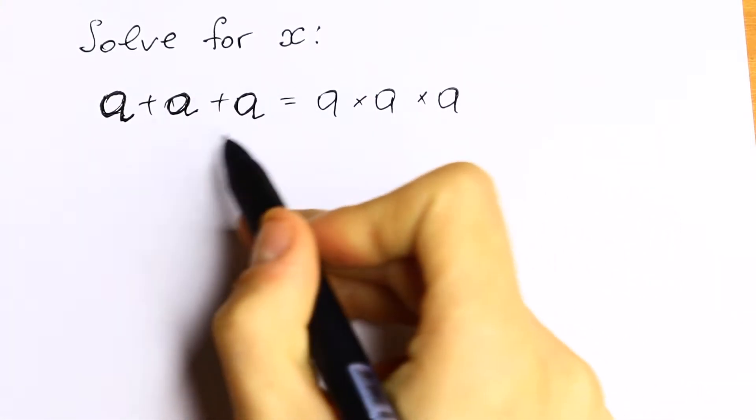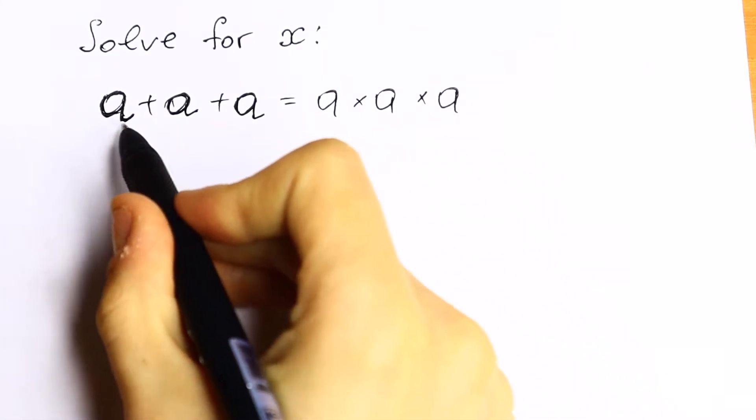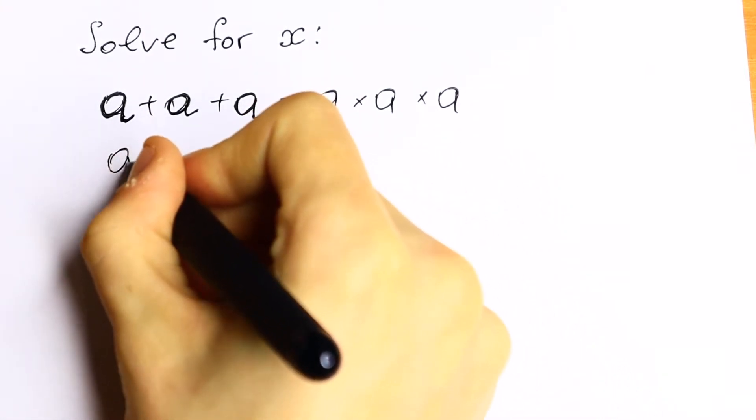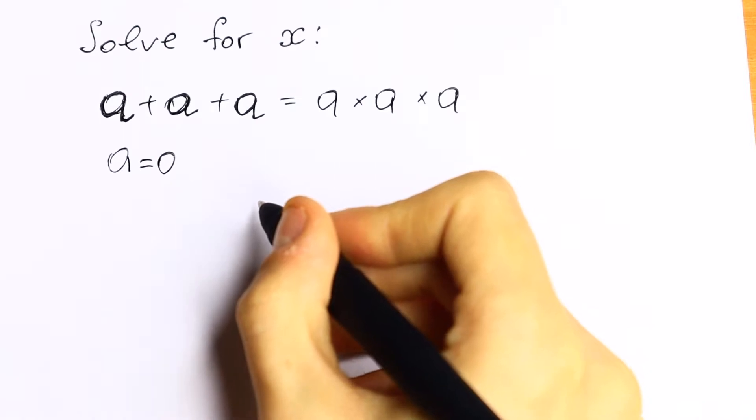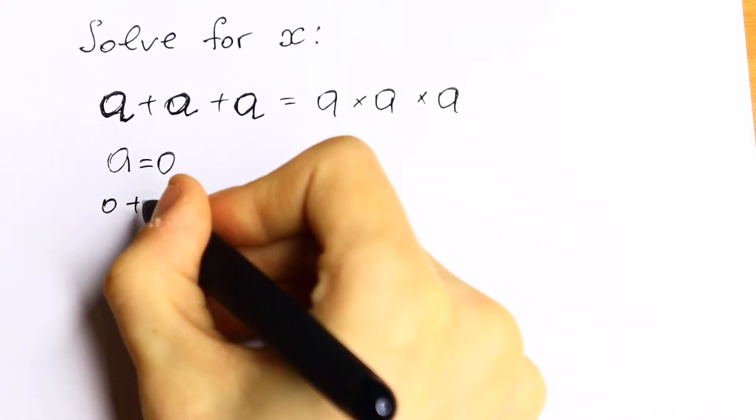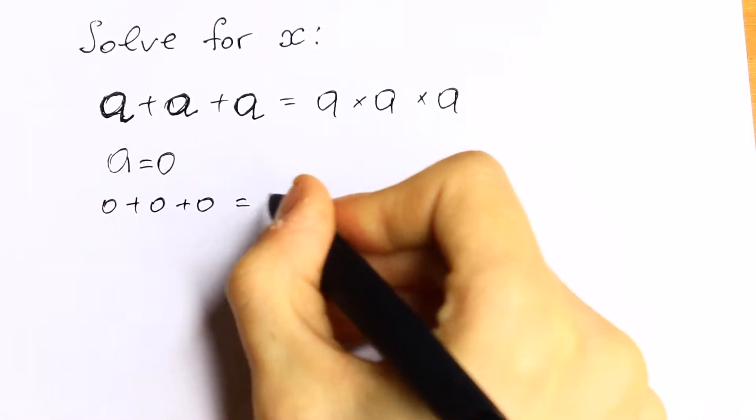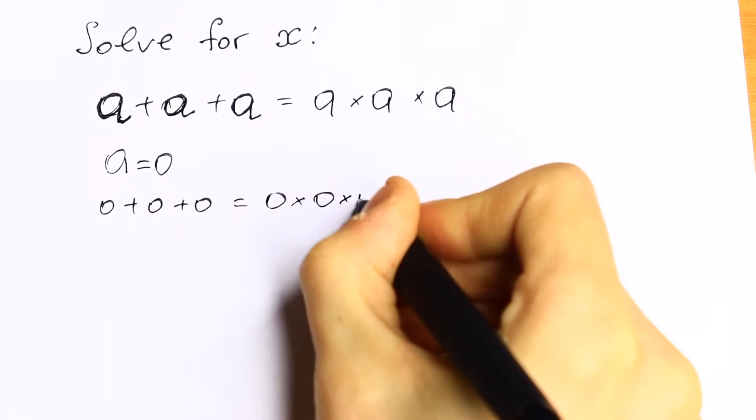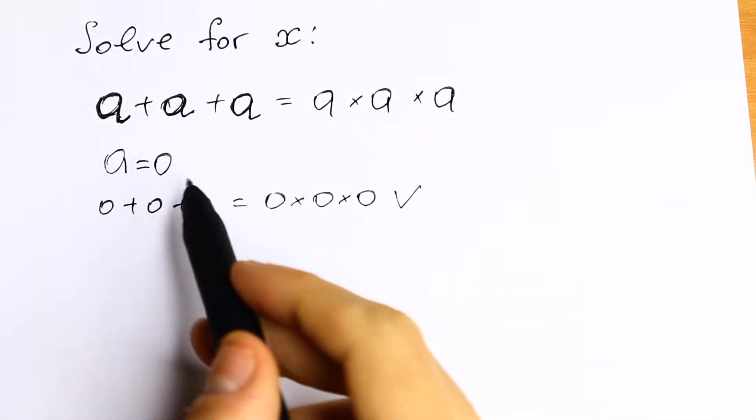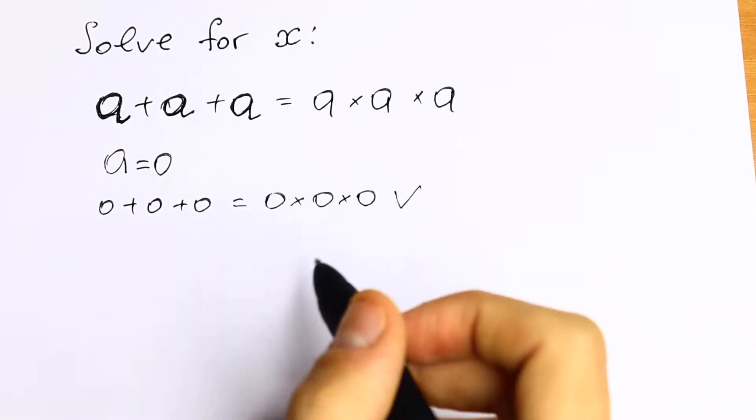On the first side this equation is easy because we can find the obvious solution. The obvious one is a equal to 0 because we will have 0 plus 0 plus 0 equal to the product 0 times 0 times 0. This is a good root but we will have one more root right here. So let's find this.